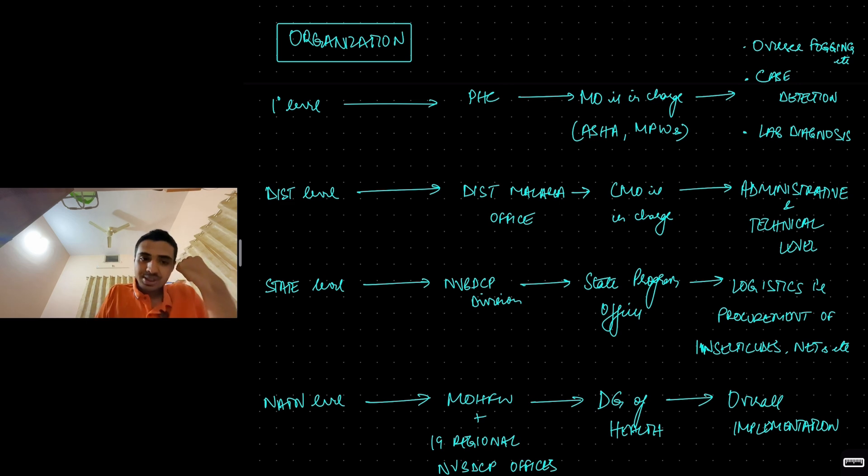Come to the district level. You have the district malaria officer. Here, who is in charge? The chief medical officer is in charge. What he or she does? Administrative and technical level, they do work. They are the administrative. Always in national programs, the district level is the administrative unit.